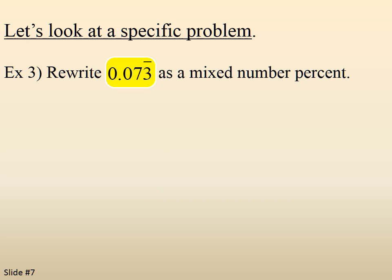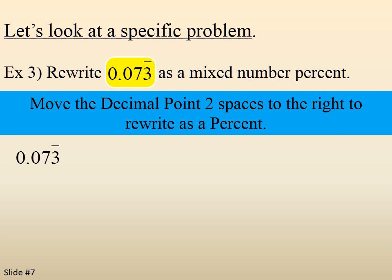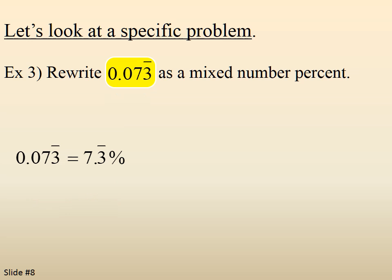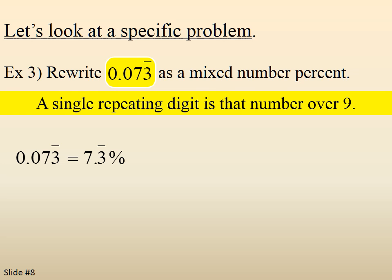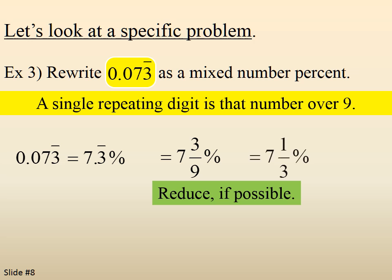One last one: zero point zero seven three repeating, so the three keeps repeating. We move the decimal over two spaces, which gives us seven point three repeating percent. A single digit repeating is that number over nine, so we have seven and three-ninths percent. Three-ninths reduces to one-third, so the final answer is seven and one-third percent.